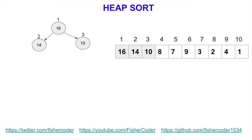To map the relationships between parents and children we need some index formulas. Given a child index, we can use the first formula to compute its parent index. For example, child index 2 divided by 2 is 1 — so the parent index is 1, which is correct. Given a parent index, we use the last two formulas to compute its two children's indices. For example, parent index 1: 1 times 2 is 2, so the left child is at index 2; and 2 times 1 plus 1 is 3, so the right child is at index 3.